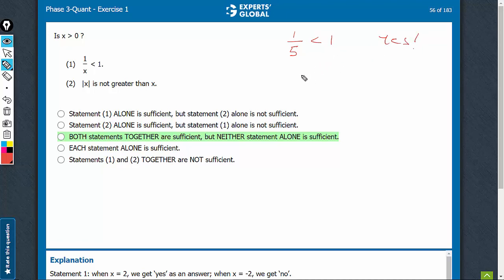It's also possible for a case such as 1 upon minus 5 is less than 1. In such a case, we will get no as an answer. So, statement 1 is not sufficient.